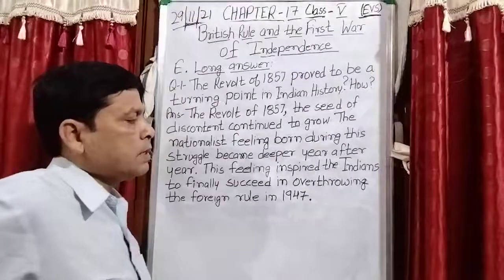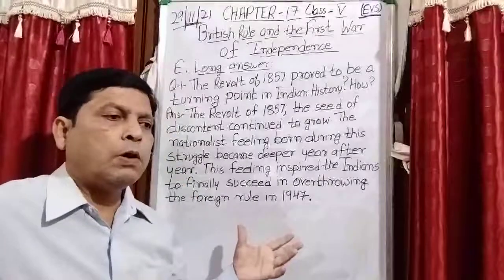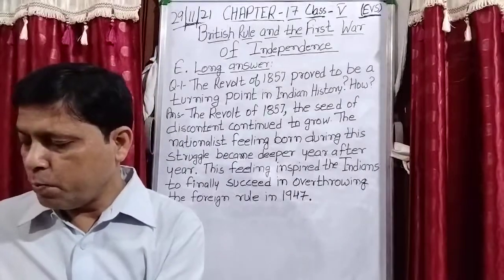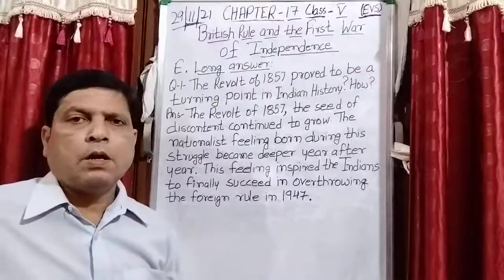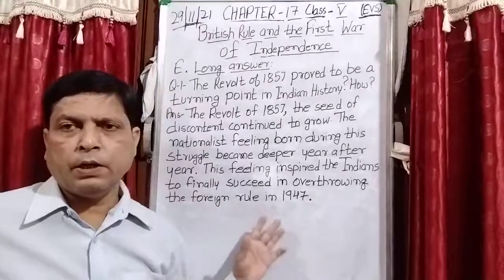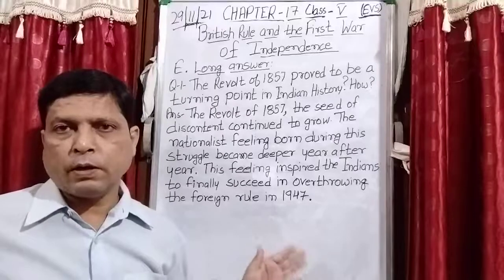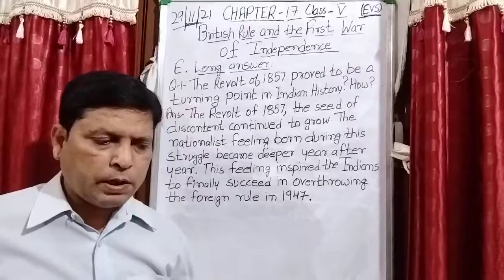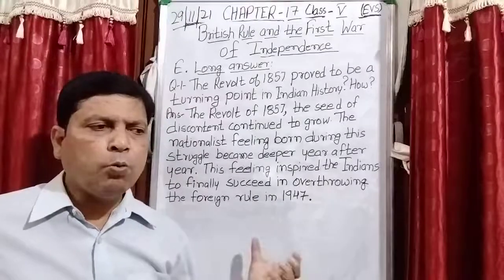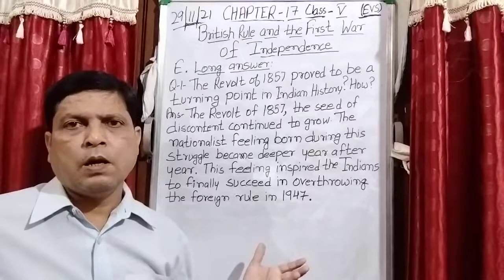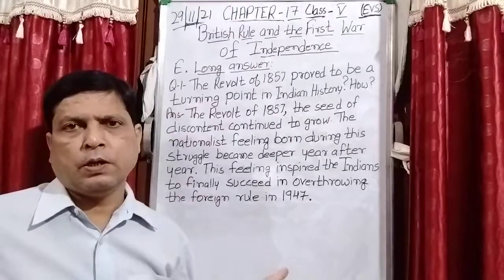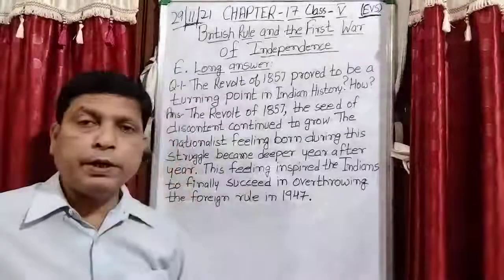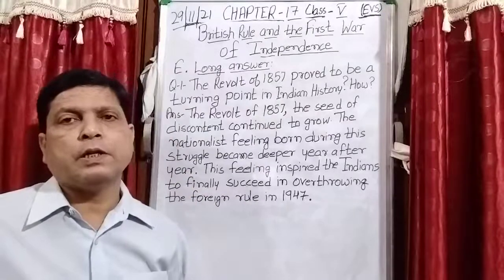In the next chapter, you will study the national movements — the Indian national movement. After 1857, India got freedom after 90 years; it took 90 years to get freedom from British rule. This was chapter number 17. In the next chapter, you will study how Indian leaders struggled for freedom against the British, and what kinds of movements were carried out by the Indians against the British. Thank you, students.